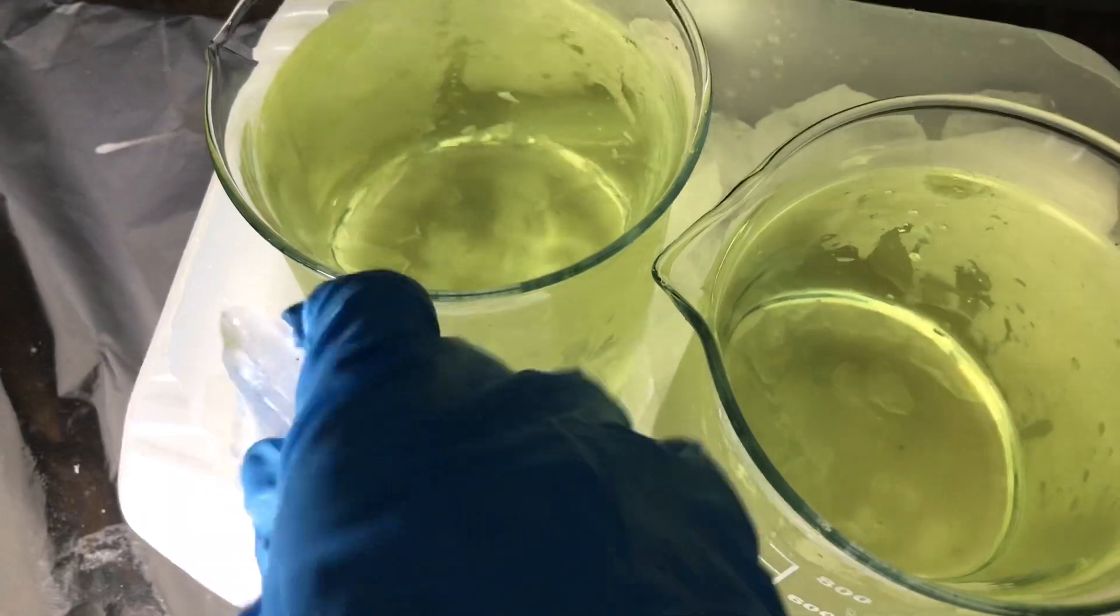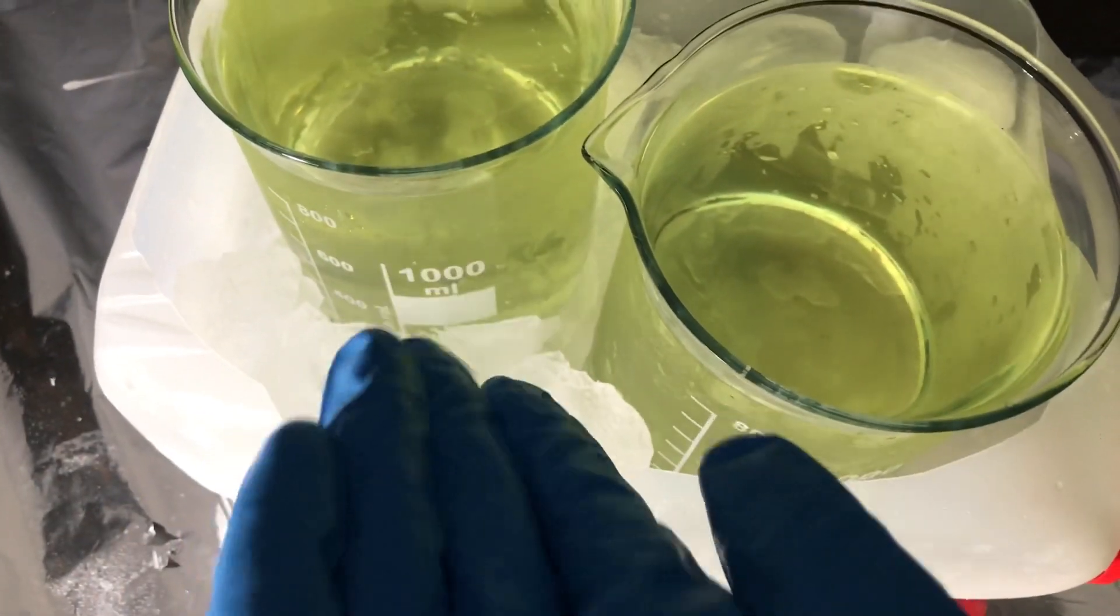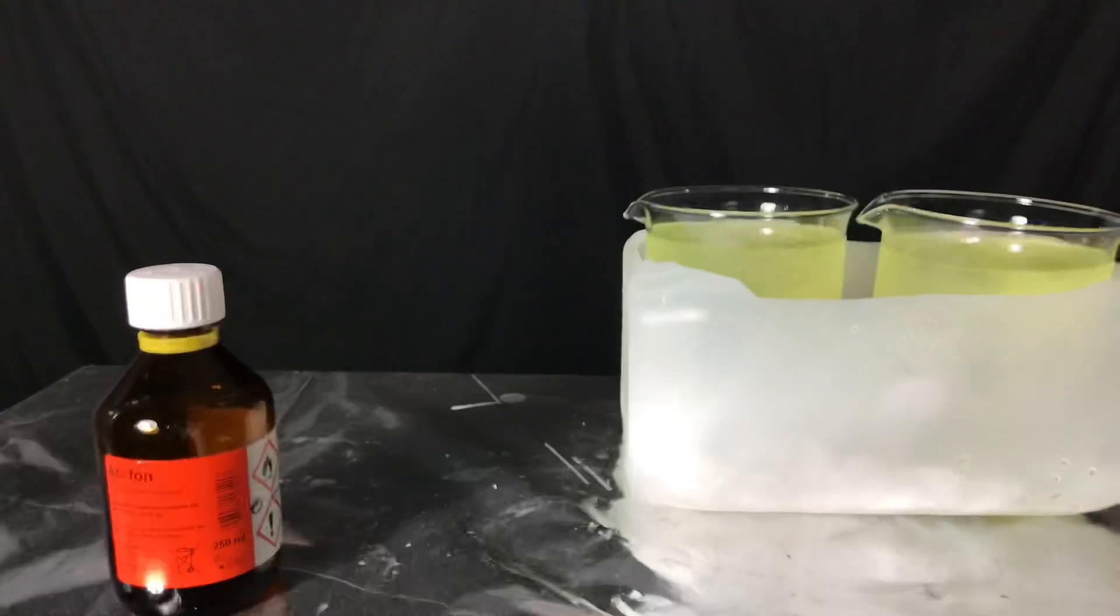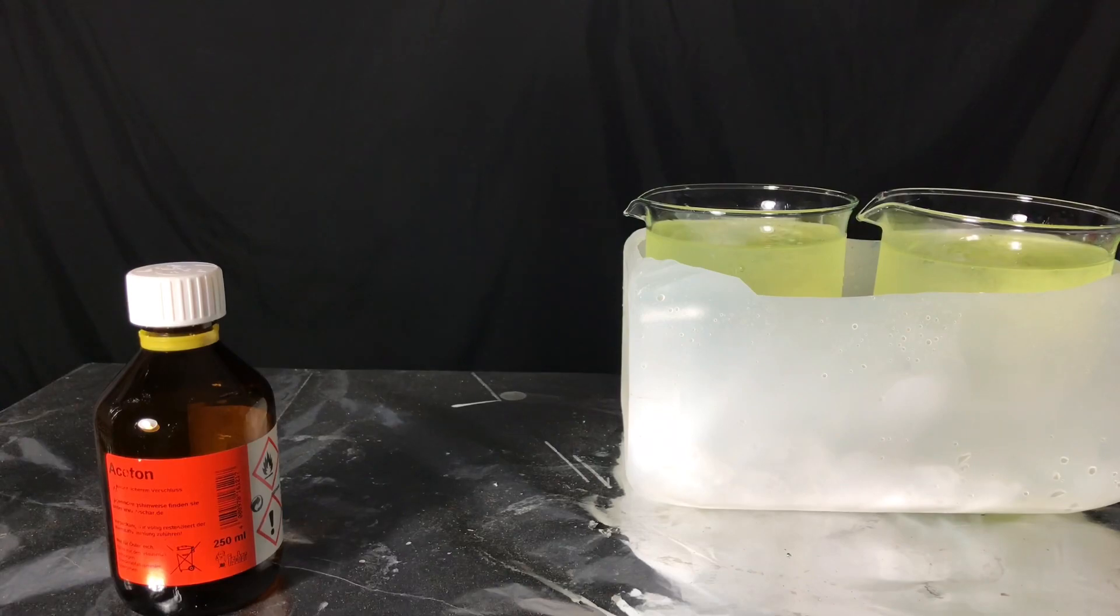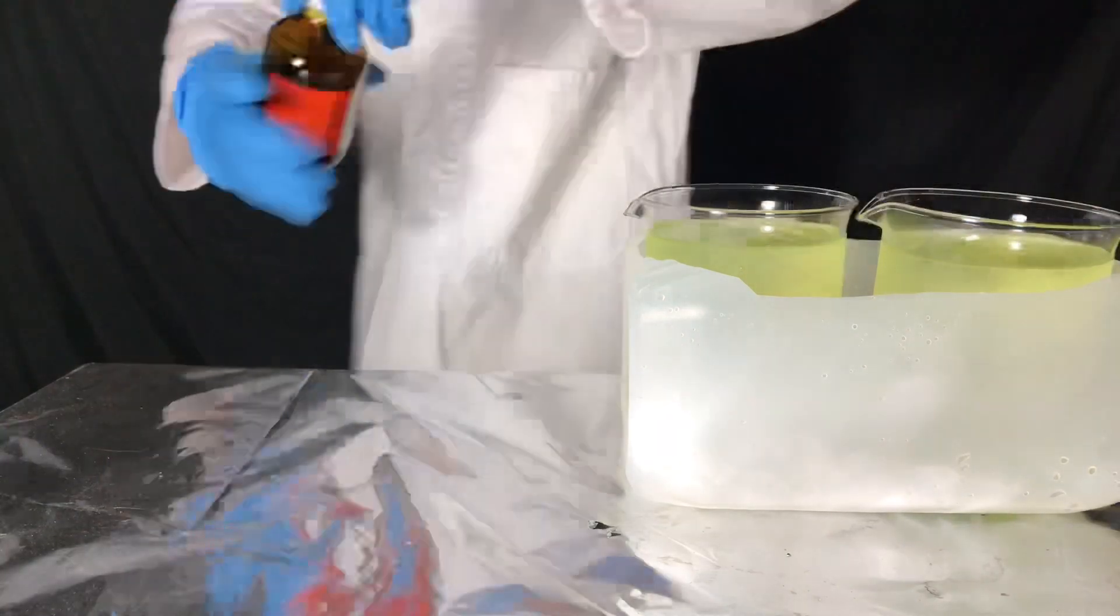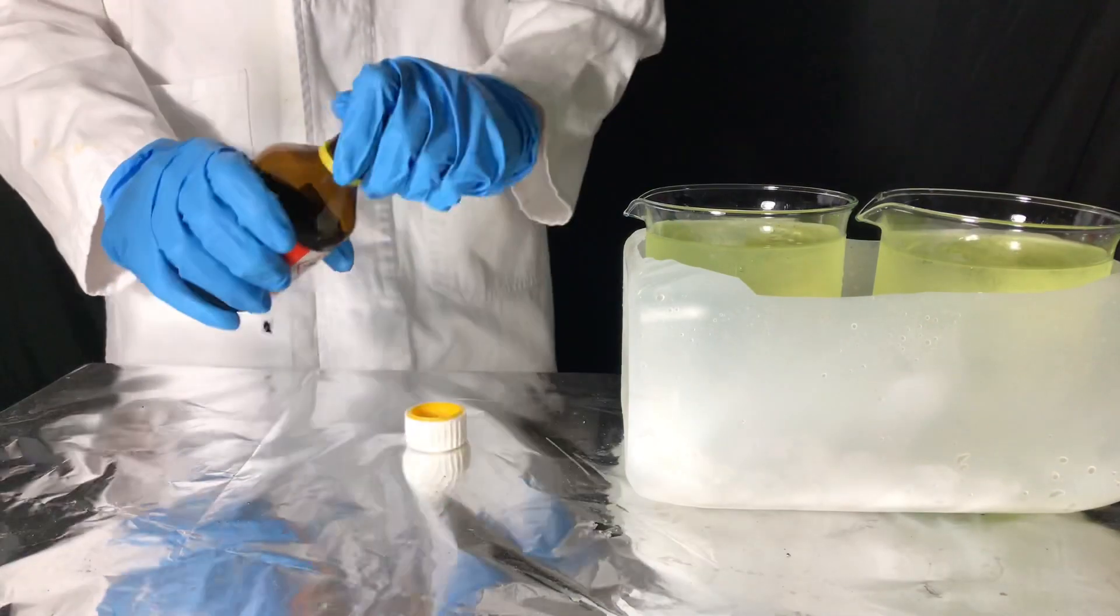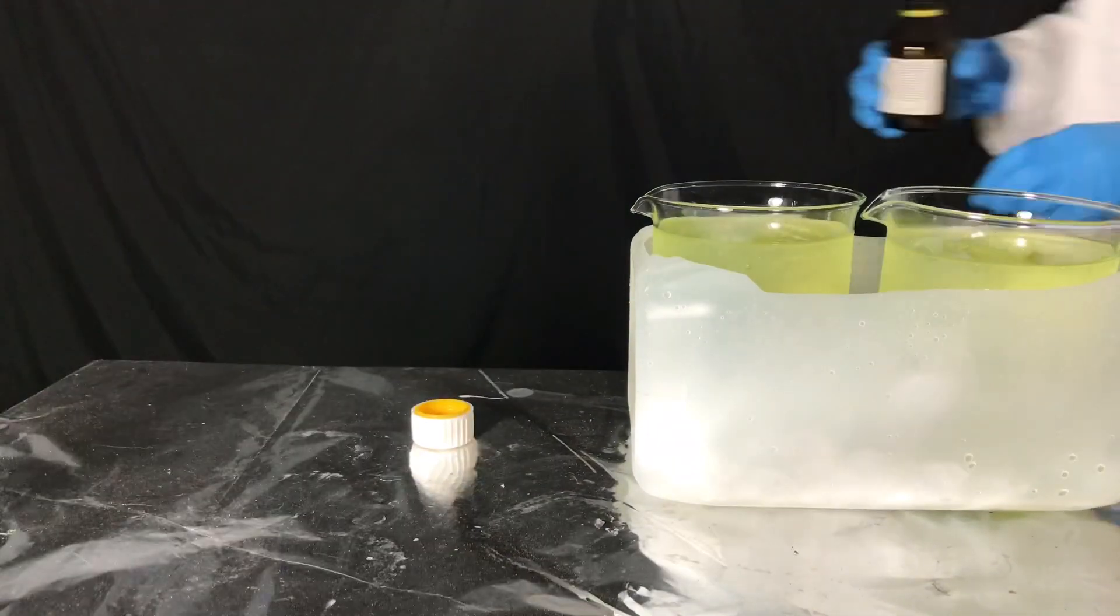The beakers were put into an ice bath because this reaction tends to get hot, and the hotter it gets, the lower our yield will be. We then continued by adding 26.5 milliliters of acetone to each one of the beakers.